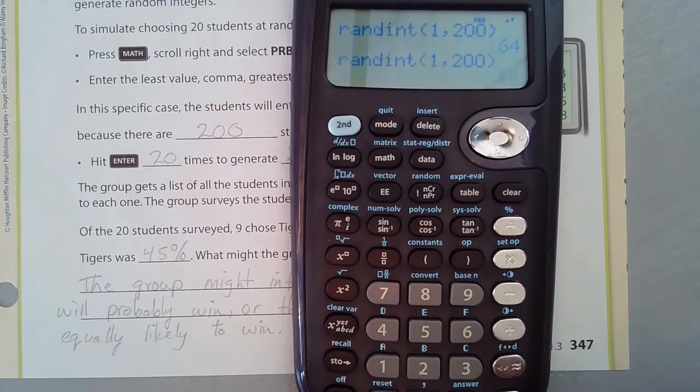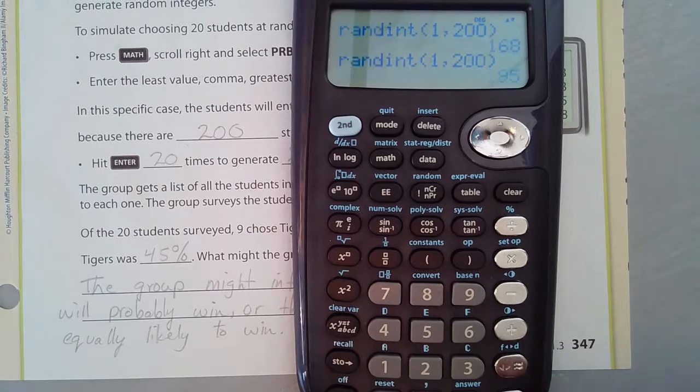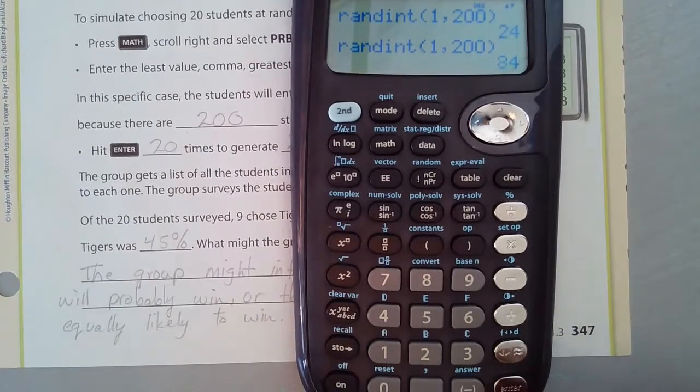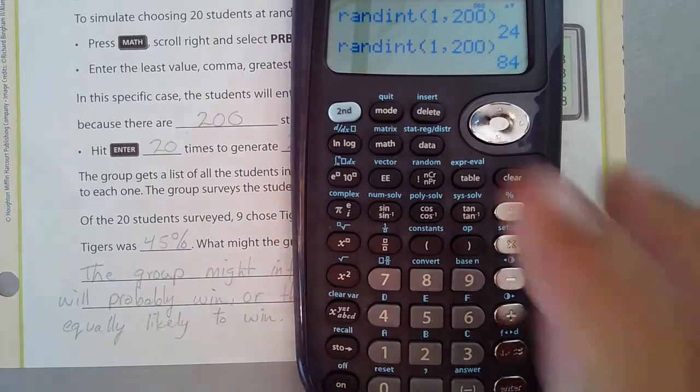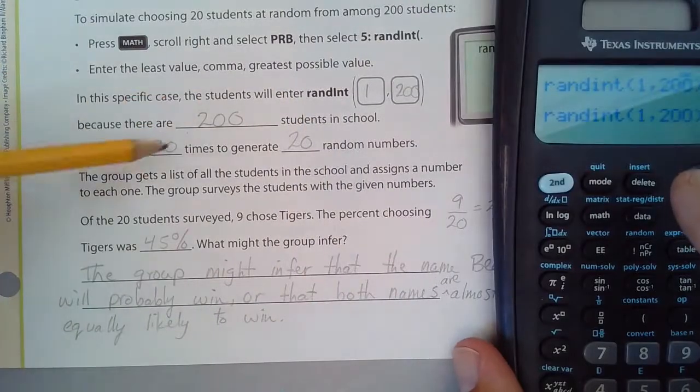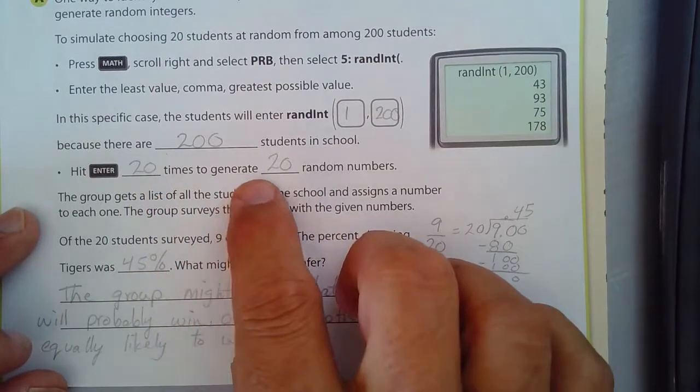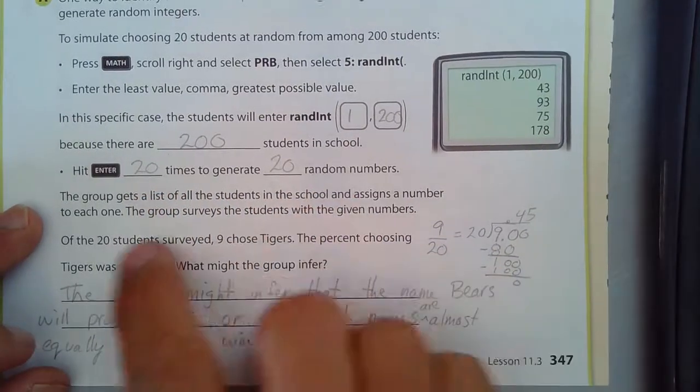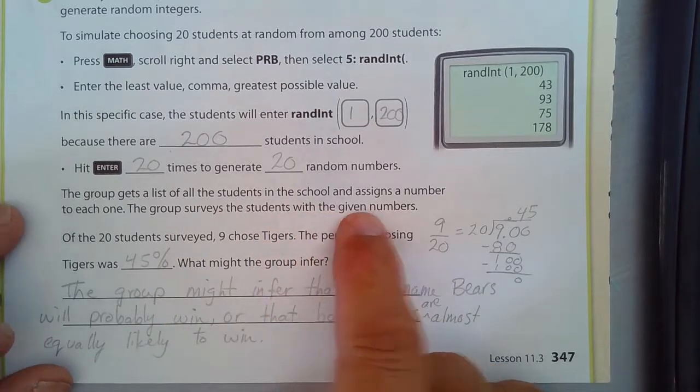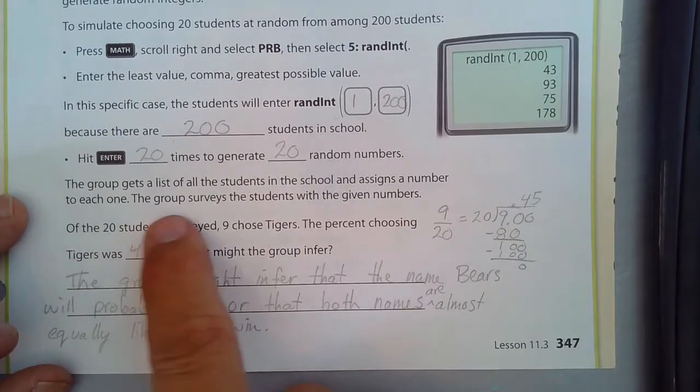So what I did is I did all this stuff here and you hit enter 20 times. That's what I was doing prior. The group gets a list of students in the school and assigns a number to each one.